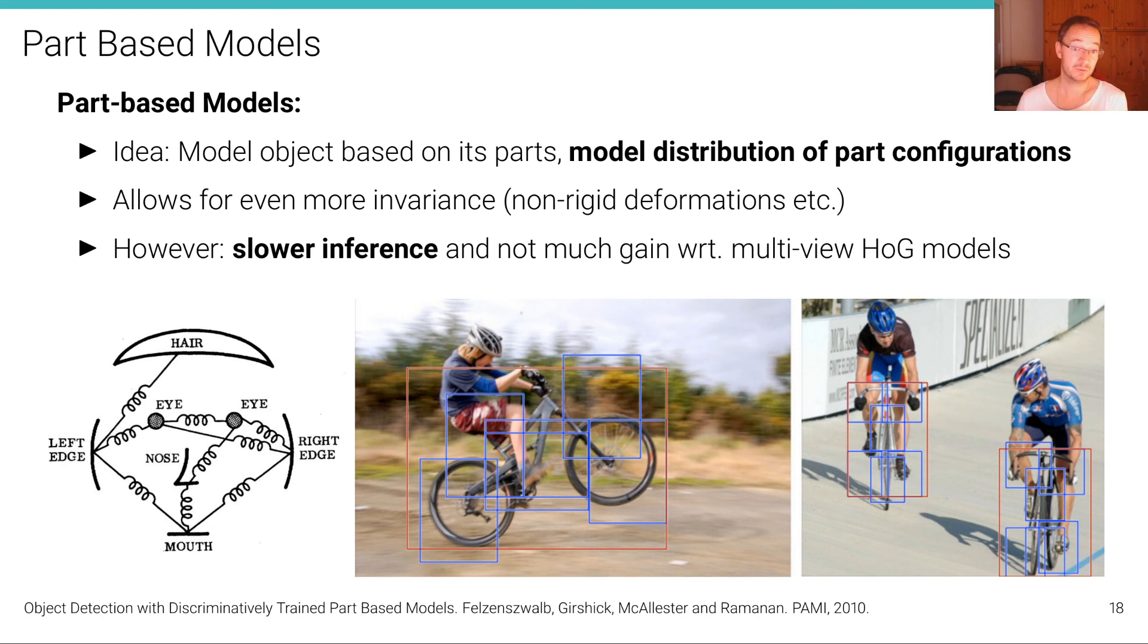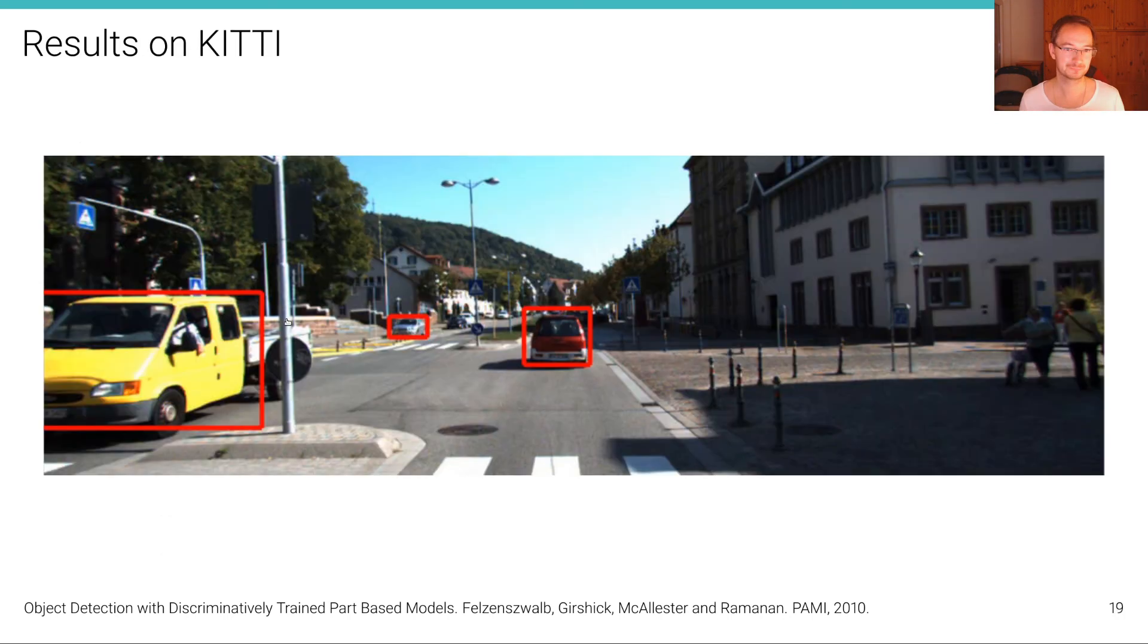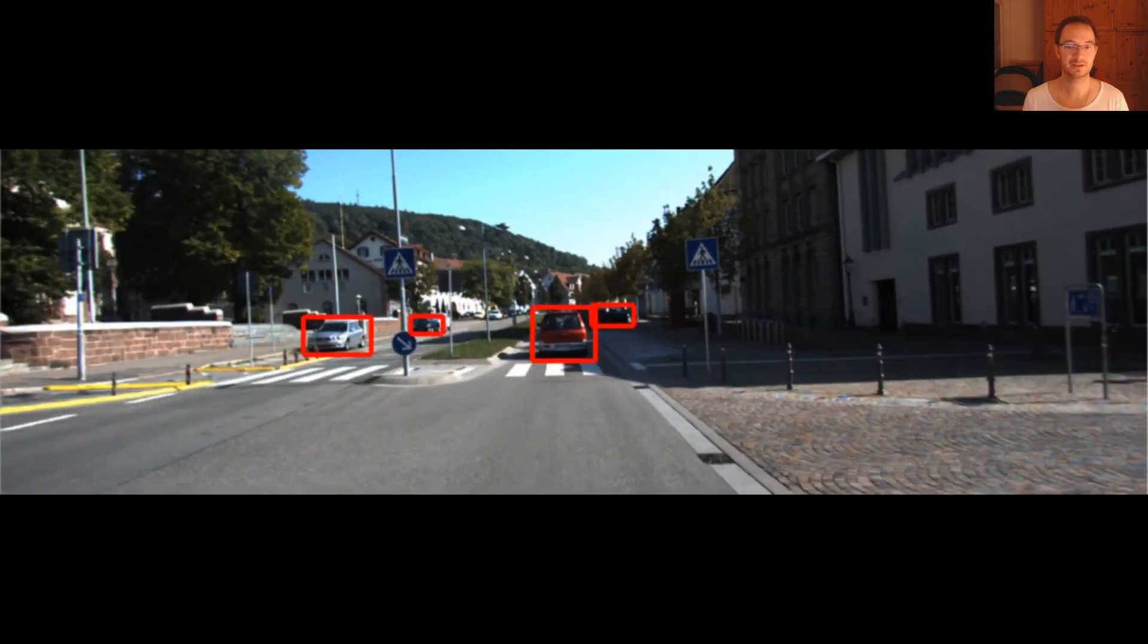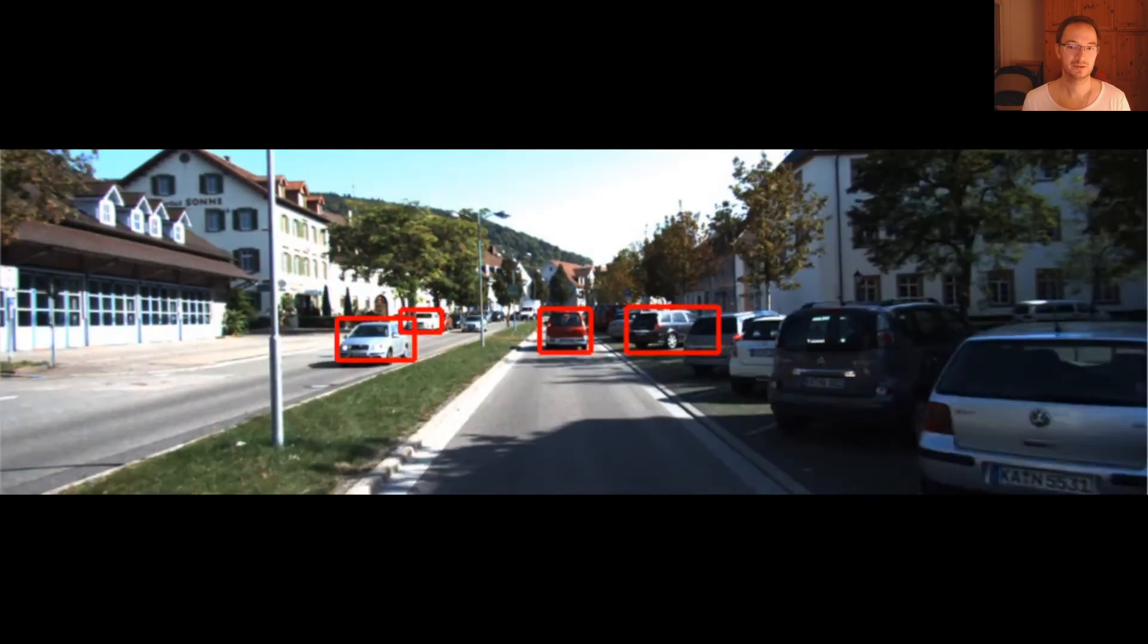However, these models lead to slower inference because we need to solve inference in a graphical model at inference time. And it was found also that they don't lead to a huge gain with respect to well-trained multi-view HOG models compared to simply training a HOG model for the entire object. But do that separately for each different view of the object that we might perceive. However, for at least for cars, which are objects that are relatively easy to detect, these algorithms already led to impressive performance. This is really non deep learning based inference based on these graphical models with simple histogram of oriented gradient features. And so here are some results on the KITTI dataset. And you can see that it is not super precise, but it detects quite some of these objects here.